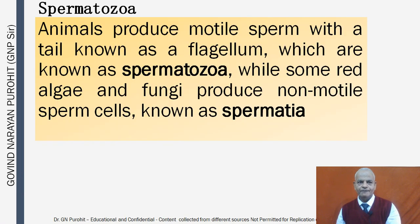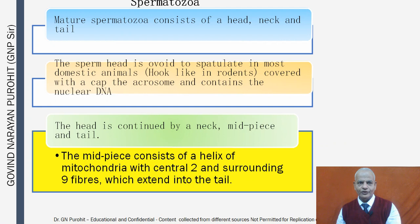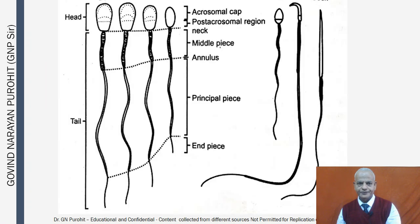Animals produce motile sperm with a tail known as a flagellum, collectively called spermatozoa. Some red algae and fungi produce non-motile sperm cells known as spermatia. Mature spermatozoa consist of a head, neck, and tail. The sperm head is ovoid to spatulate in most domestic animals but hook-like in rodents. It is covered with a cap — the acrosome — and contains nuclear DNA. The midpiece consists of a helix of mitochondria with central two and surrounding nine fibers extending into the tail.